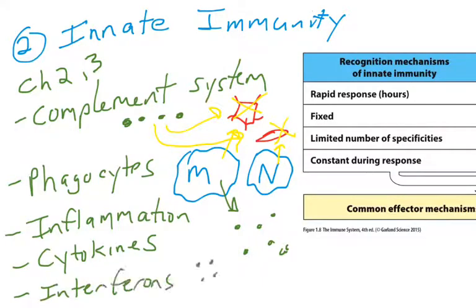The last two defenses discussed in innate immunity are interferons, which are more like communication molecules, and NK cells — natural killer cells. We're not going to go into too much detail on NK cells, just because there's not a lot known about them. What we do know is pretty confusing, so we probably won't spend a whole lot of time on NK cells.